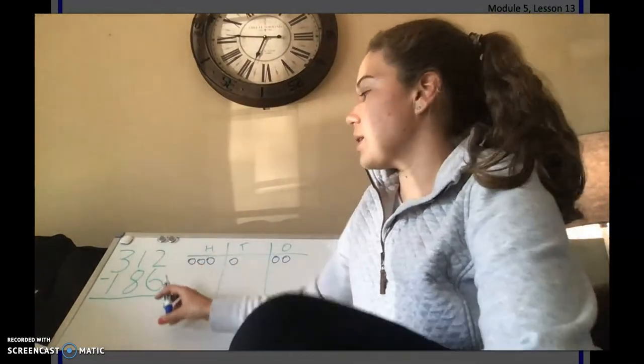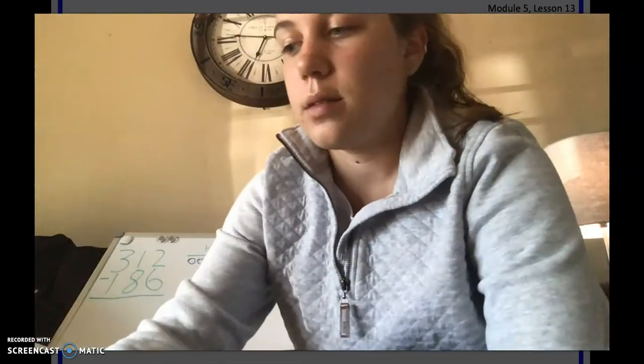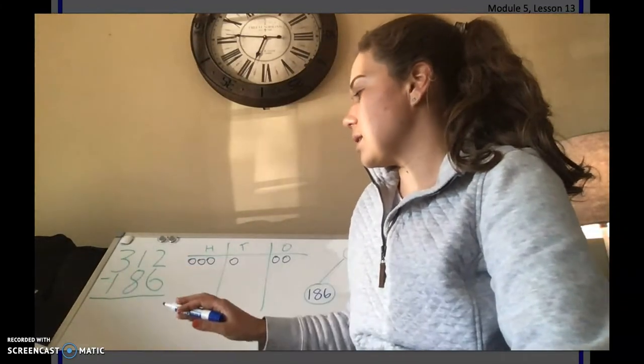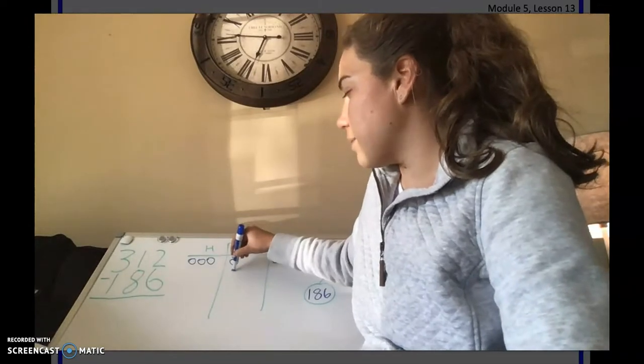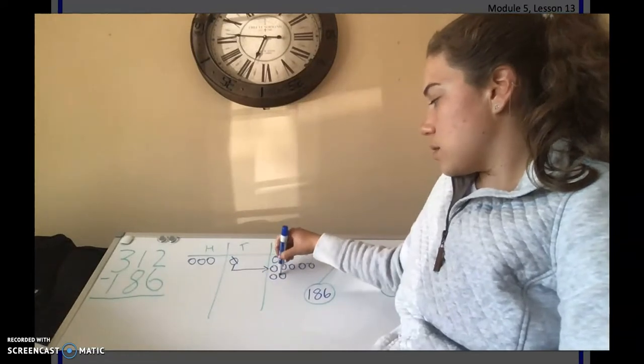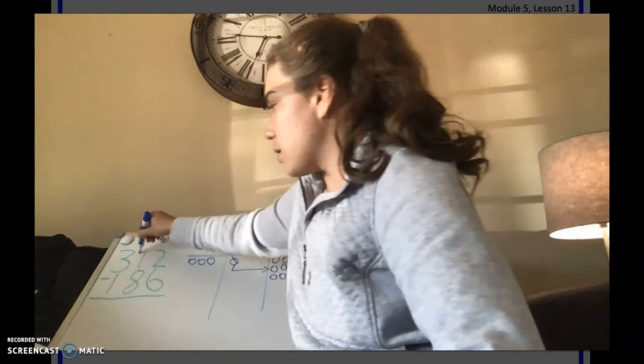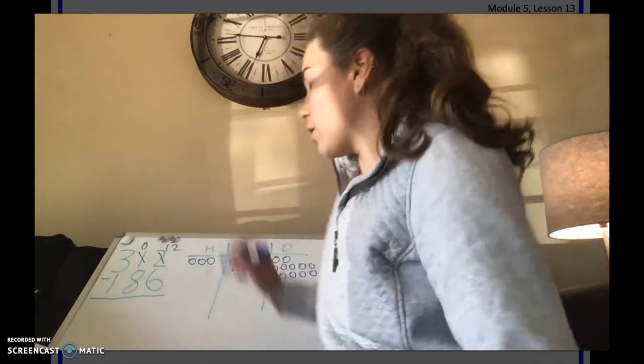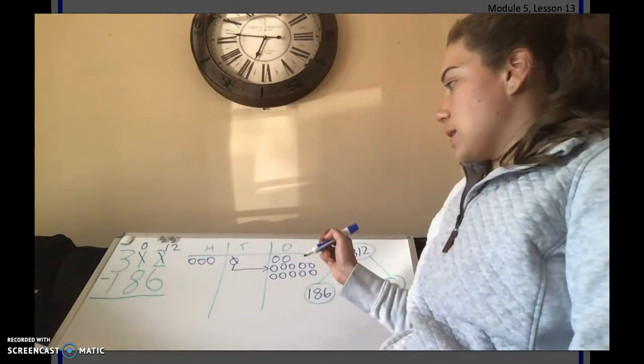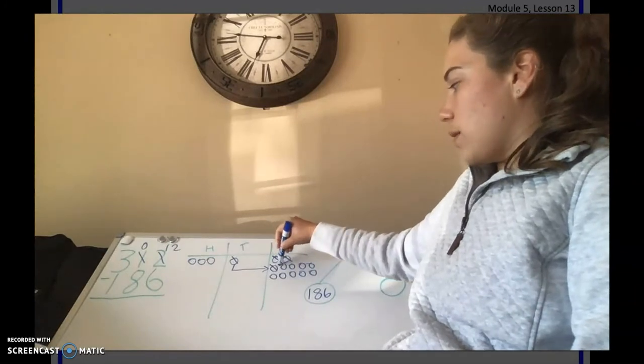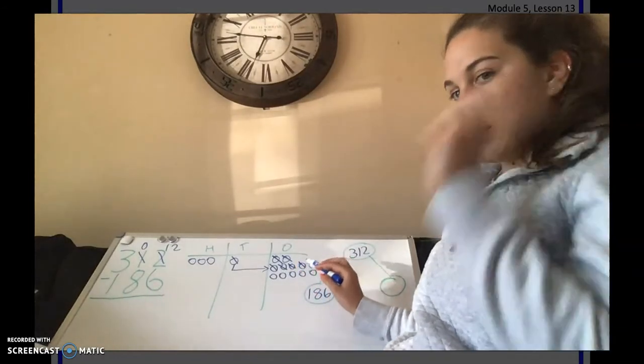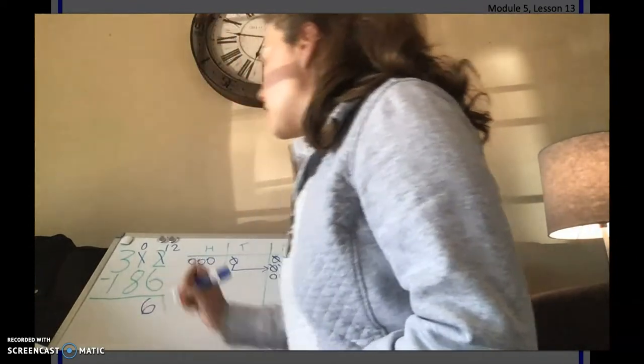Now we're going to take away 186. So we're going to start in our ones column and do 2 minus 6. Can we do that? No. So we need to trade our 1 ten in for 10 ones. And now, there are 0 here, and there are 12 in our ones column. So now we're going to do 12 minus 6. Let's cross off 6 ones. Ready? 1, 2, 3, 4, 5, 6. And let's see how many we have left: 1, 2, 3, 4, 5, 6. So 12 minus 6 is 6.